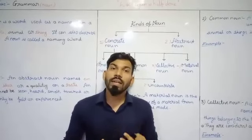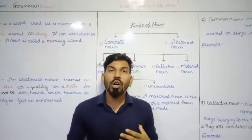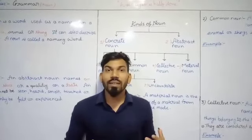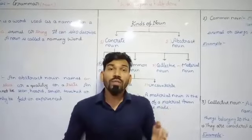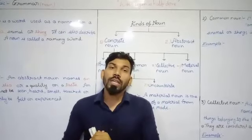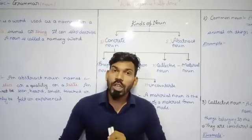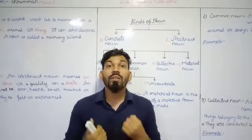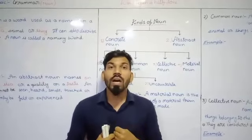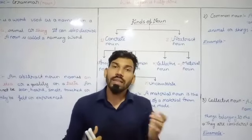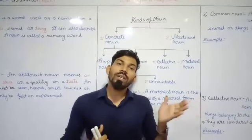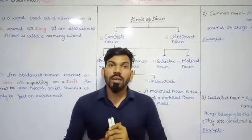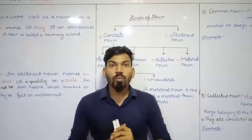Lion, Tiger, Dog, Horse, Cow, etc. Along with all this, if we are talking about our abstract ideas, like our emotions or feelings, that is also considered in the nouns.